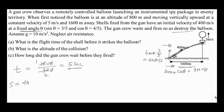The vertical displacement is: ut − ½gt² = 240 × 5 − ½ × 10 × 25 = 1200 − 125 = 1075 meters. So this is the altitude at which the shell hits the balloon.